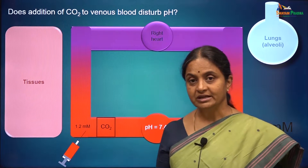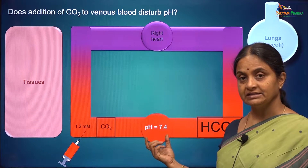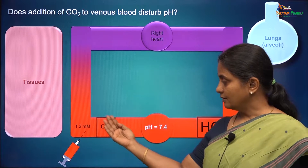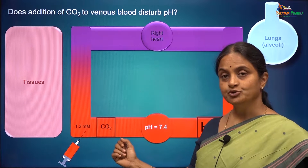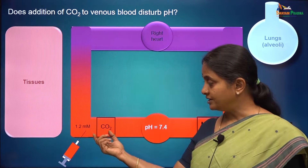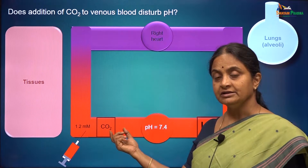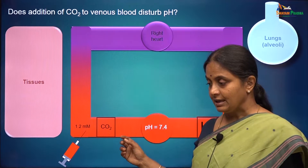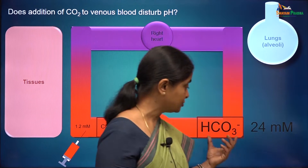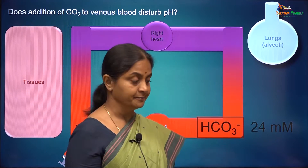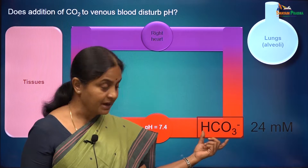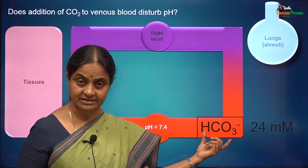In the previous session we considered how the pH of arterial blood is kept at 7.4. We started with carbon dioxide concentration of 1.2 millimolar and showed Sajal's experiment where addition of this much carbon dioxide to plain water resulted in a pH around 5. Then we said pH of plasma is not so low but remains 7.4 because of an excess of bicarbonate in blood. We then realized that bicarbonate in arterial blood is necessary for some reason.